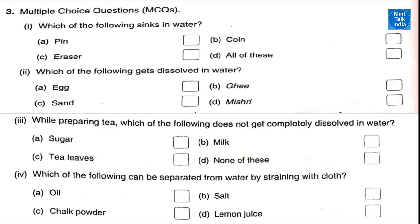Question 3, multiple choice. Number 1: which of the following sinks in water? Pin, eraser, and coin — all of these will sink in water. Number 2: which of the following gets dissolved in water? Only Mishri will get dissolved in water. Number 3: while preparing tea, which of the following does not get completely dissolved in water? That is tea leaves; it will not get completely dissolved and we have to strain it.